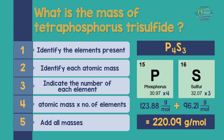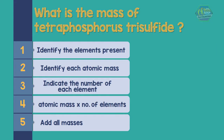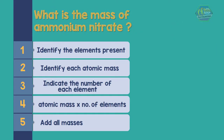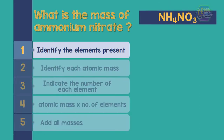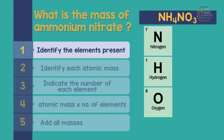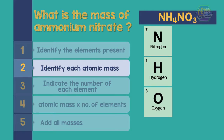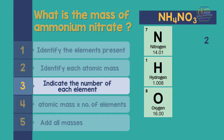Another example: what is the mass of ammonium nitrate? First, write the formula of the compound (NH₄NO₃). We notice that there are 3 different kinds of elements: nitrogen, hydrogen, and oxygen. The atomic mass of nitrogen is 14.01 g/mol, hydrogen is 1.008 g/mol, and oxygen is 16 g/mol. There are 2 nitrogen, 4 hydrogen, and 3 oxygen atoms.